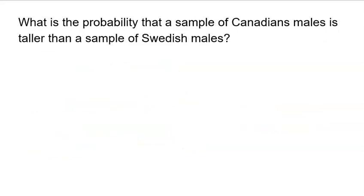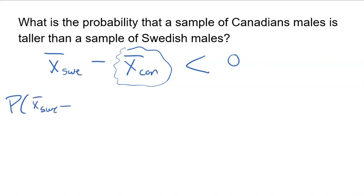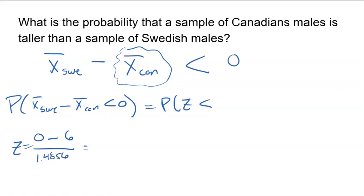One more question here. What is the probability that a sample of Canadian males is taller than a sample of Swedish males? I built my entire model on the idea of looking at the Swedish mean minus the Canadian mean. So if I'm looking for the Canadian mean to be bigger, that means I'm looking for a difference to be less than zero. Because if I'm less than zero, the only way that can happen is if the Canadian sample was bigger. So I do need to find the Z-score for zero, and I'm going to subtract the mean of six, because that's what I expect, and I'm going to divide that by 1.4856, the standard deviation for my samples. Negative six divided by 1.4856, and I'm going to get a very low Z-score, negative 4.0388.